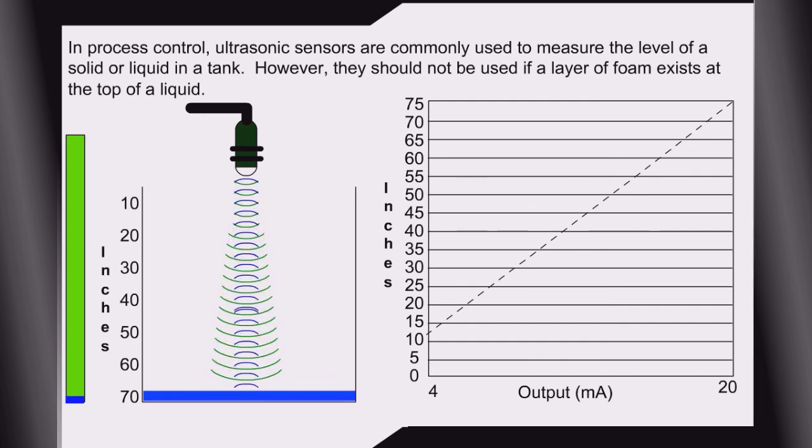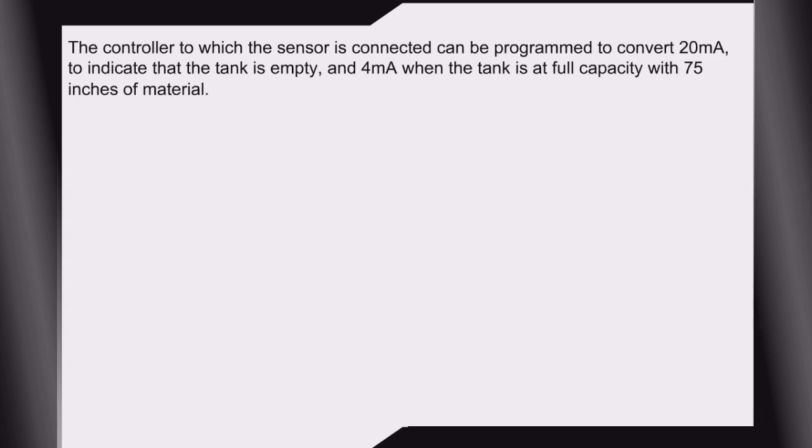The controller to which the sensor is connected can be programmed to convert 20 milliamps to indicate that the tank is empty and 4 milliamps when the tank is at full capacity with 75 inches of material.